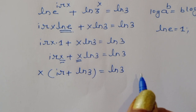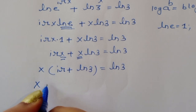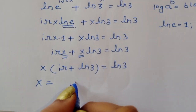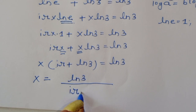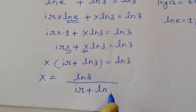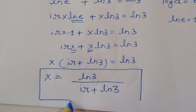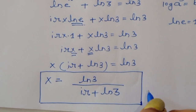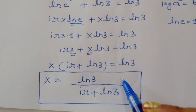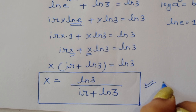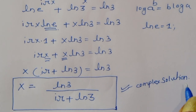Therefore, the value of x equals ln of 3 divided by the quantity i pi plus ln of 3. This is the value of x. We solved this question using two methods and obtained a complex solution in both cases.